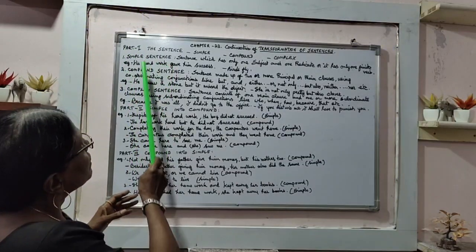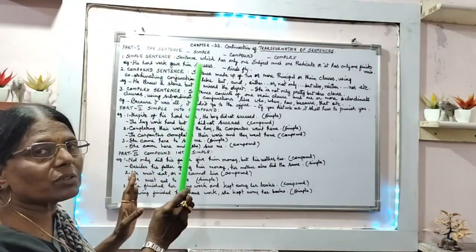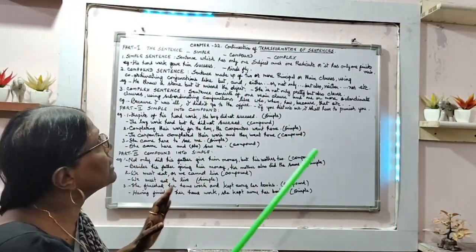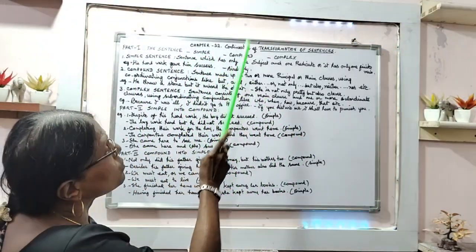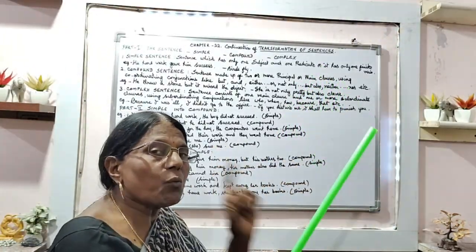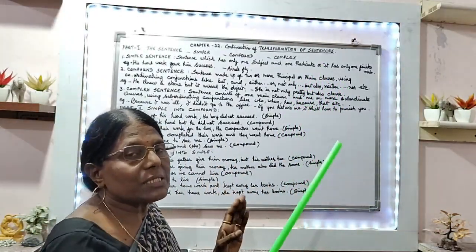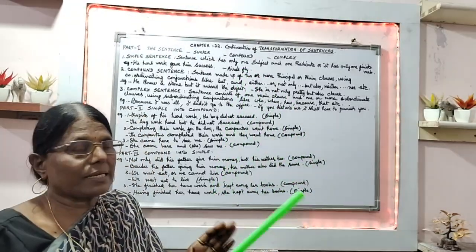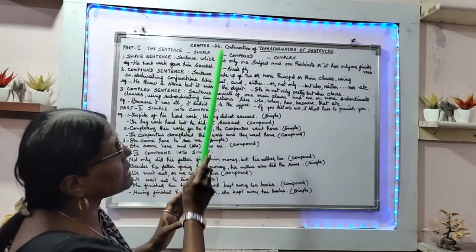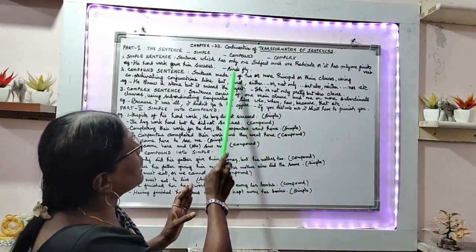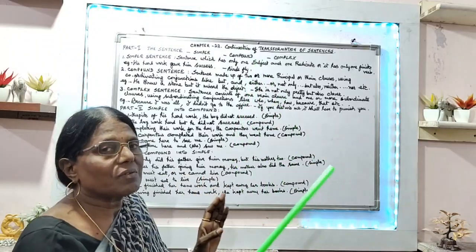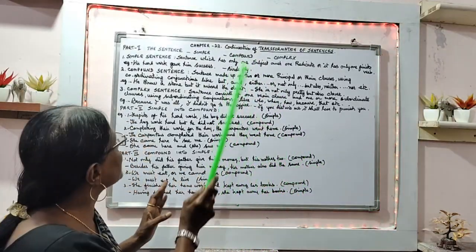Part 1. Let us have about simple sentence. What is a simple sentence? A sentence which has only one subject and one predicate, or it has only one finite verb — that is called a simple sentence. For example: 'His hard work gave him success.' Another example: 'Birds fly.' Those are examples of simple sentences.